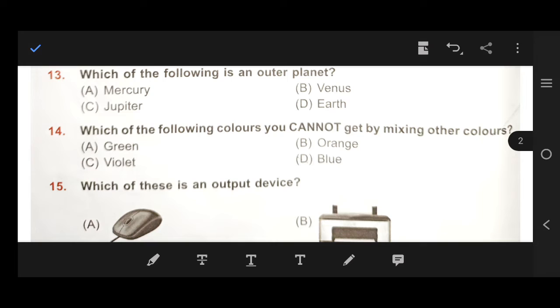Next, number 13, which of the following is an outer planet? Outer planet. So, our right answer is Jupiter. Jupiter, our right answer is C, Jupiter. Next, number 14, which of the following colors you cannot get by mixing the other colors? Right answer is D, blue.